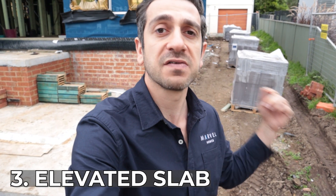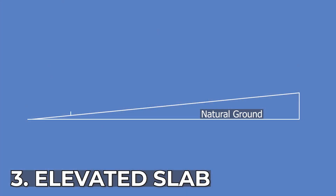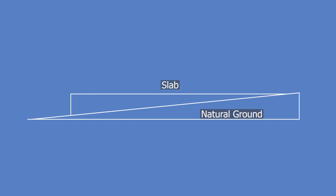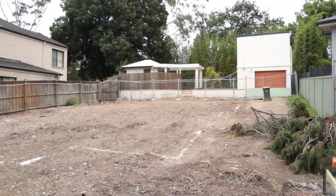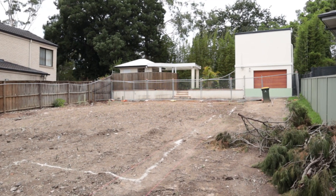Option number three is an elevated slab. An elevated slab is where you don't want steps inside the house and you don't want retaining walls around the property. Let me take you through what we've done here on site and why we've opted for an elevated slab as opposed to the other two options.